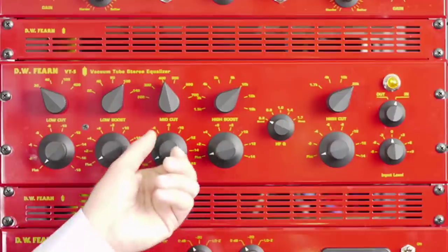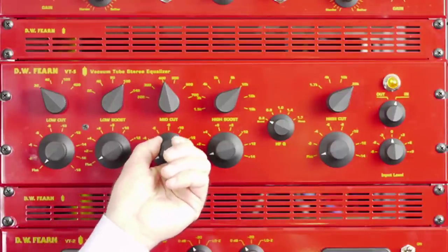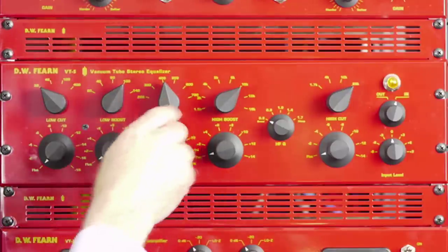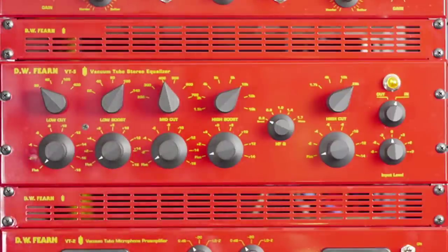The third control is called mid-cut. And this is used to reduce the intensity of mid-range frequencies. And you can see there are five or six different bands where you can reduce that.